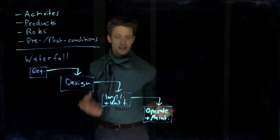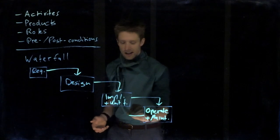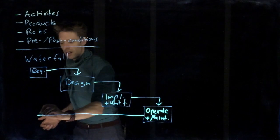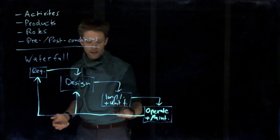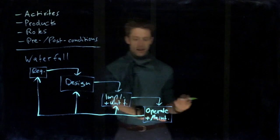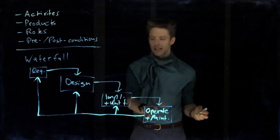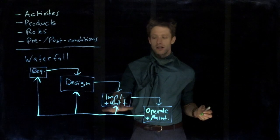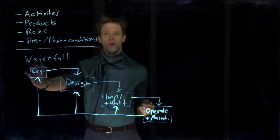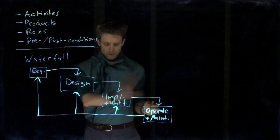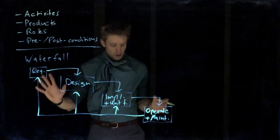And then of course, since we do maintenance, things might change. So there is the potential that we go back to any of these steps. If we, for example, just discover a small bug that we could fix, then maybe we just go back to implementation and testing. But maybe we also discover new needs and we need to go all the way back here. So this is how the waterfall model looks like.